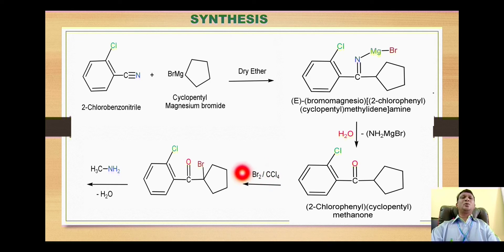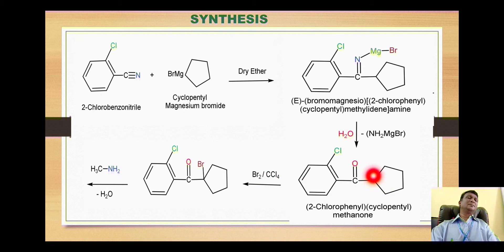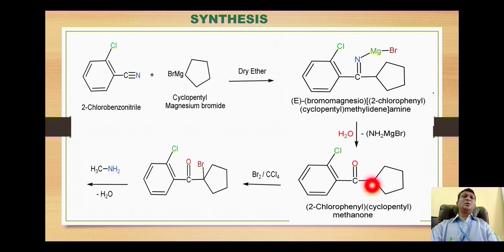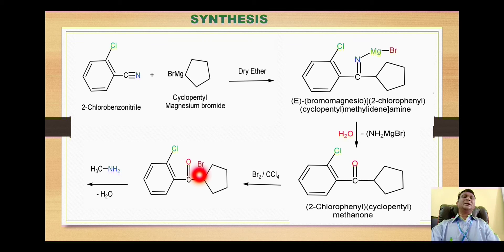This ketone is then reacted with bromine in the presence of carbon tetrachloride. This is a free radical substitution reaction. The alpha carbon relative to the carbonyl group is a tertiary carbon, so it chiefly undergoes free radical substitution with bromine, resulting in attachment of bromine on this alpha carbon.